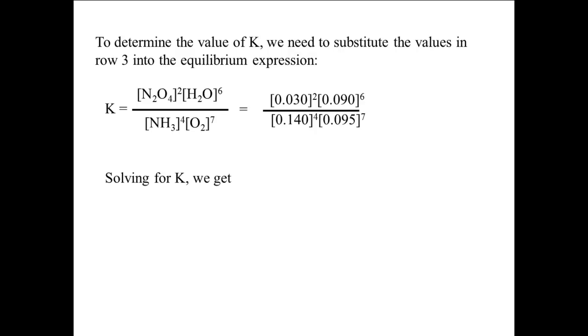Solving for K, we get the expression of the concentrations raised to their powers, which we can solve to find the value 17.825. The answer is K equals 18 because the answer is only good to two sig figs, since three of the values we used in the calculation are only good to two sig figs.